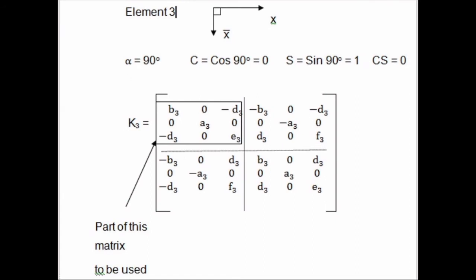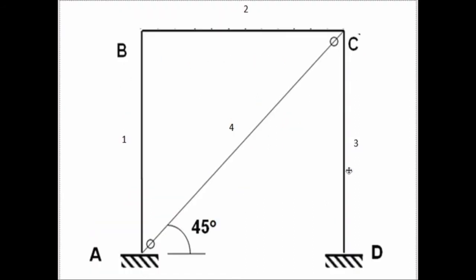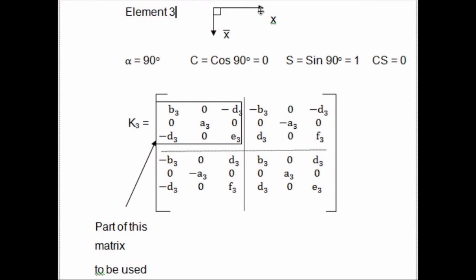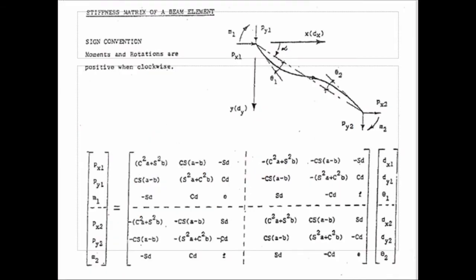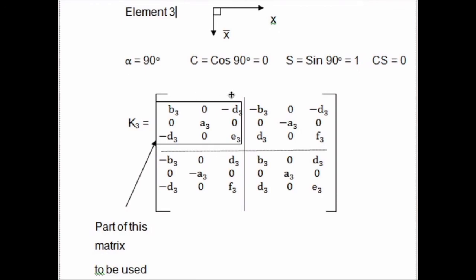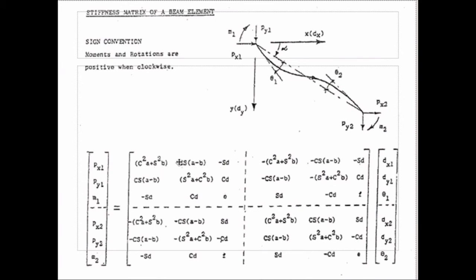Coming to the other element CD, that is going down. For that, the origin will be in this direction and the angle will be 90 degrees downward. The origin is here and X-bar is 90 degrees, so cos 90° = 0 and sin 90° = 1. C = 0, S = 1. We substitute C = 0 and S = 1 into that particular equation, just as earlier, and we get the matrix like this.